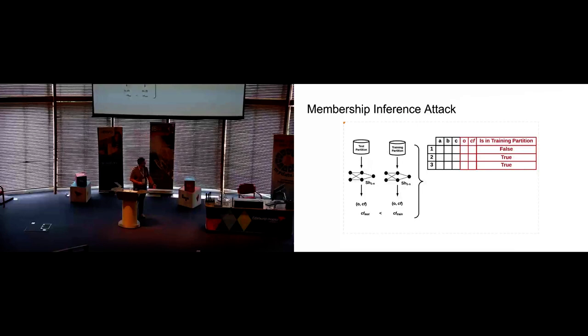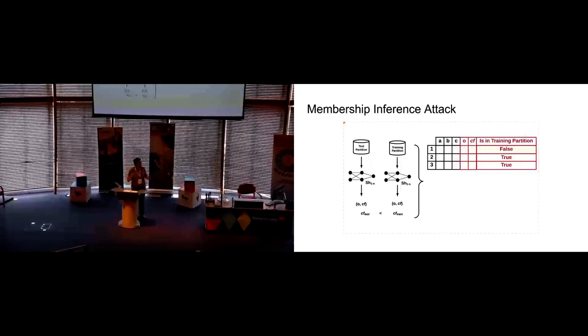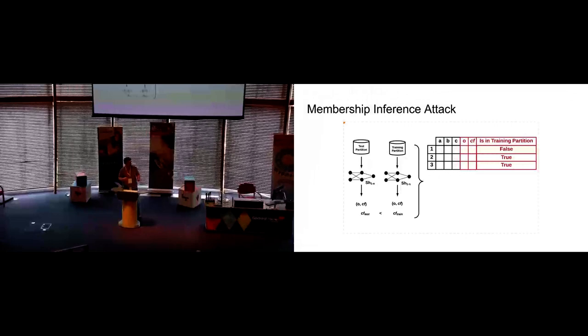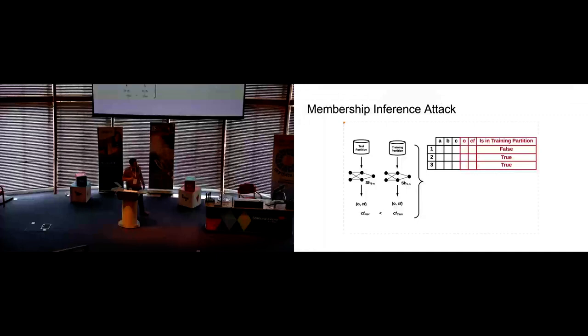And then what we can do is we have our dataset A, which has instances one, two, and three, and shares instance two and three with dataset B. We can add more features to this. We can add the feature of the output and the certainty factor. And we also know which data our shadow ensemble has seen and which it hasn't. So we can also add this label, which is either true or false. Was it in our training partition?